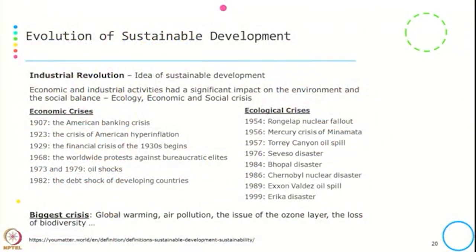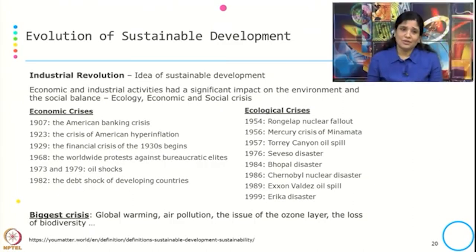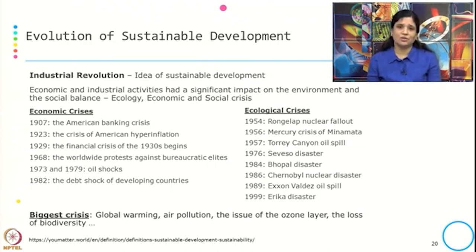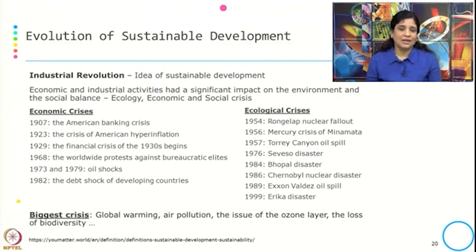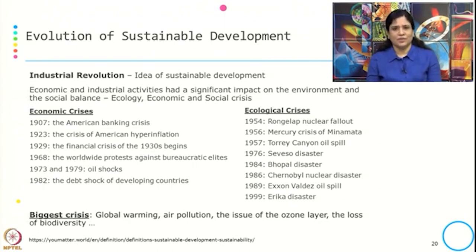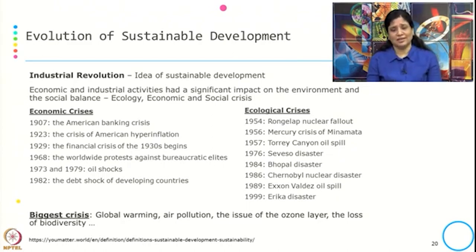Why the industrial revolution? Because the economic and industrial activity that started after the industrial revolution had a significant impact on the environment and social balance. And that led to ecological, economic, and social crisis. There are many crises — a few of them are economic crises and a few are ecological crises.